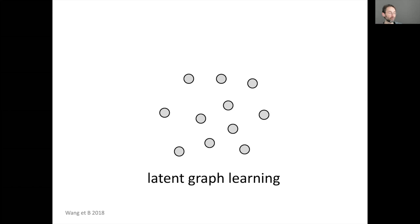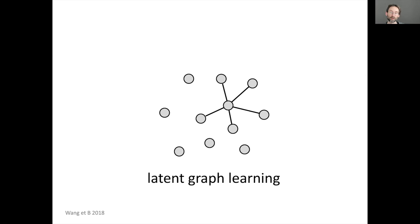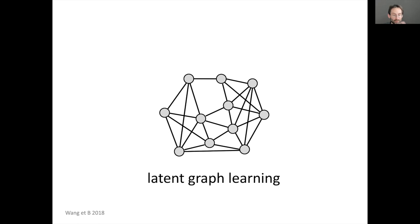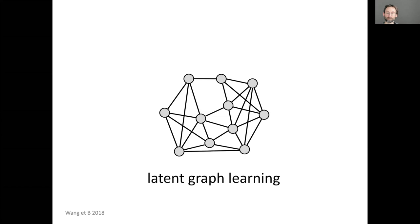In many cases we aren't given a graph but a point cloud in high-dimensional feature space, and we want to learn an optimal graph for the task. The first architecture to do this was Dynamic Graph CNNs, applied to 3D point clouds in computer vision and graphics, constructing a k-nearest neighbor graph on the fly. More generally, you can decouple the computational graph from the input graph for computational efficiency, denoising, or resolving information bottlenecks.